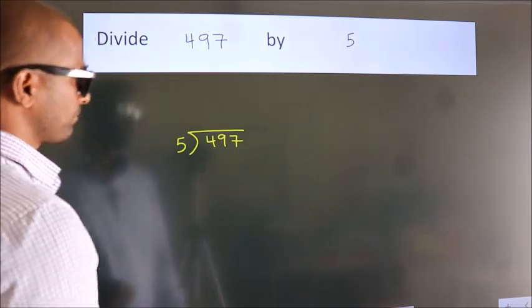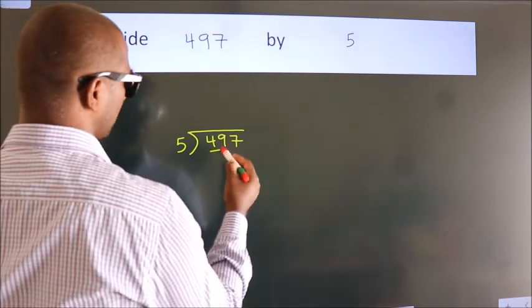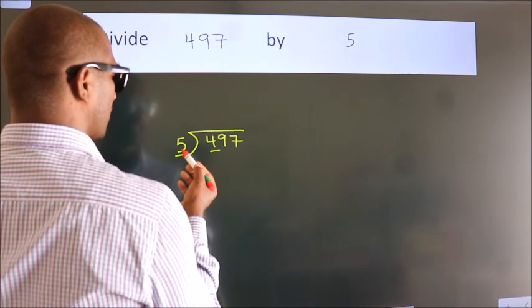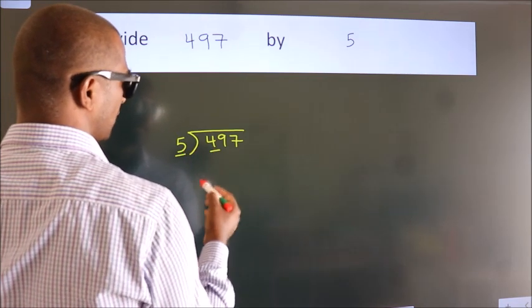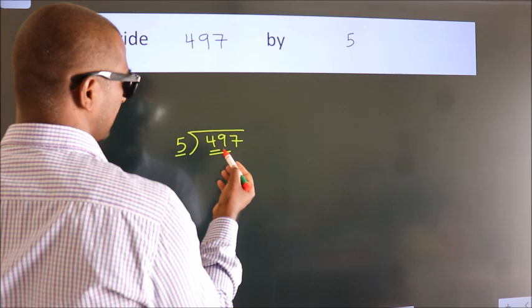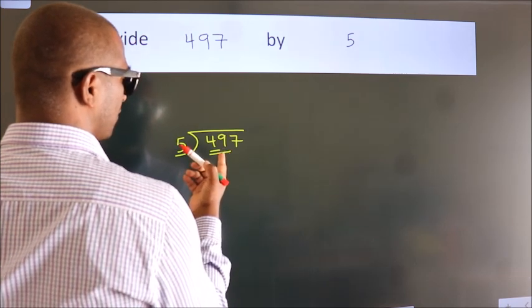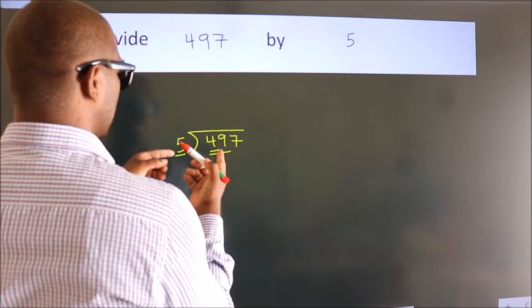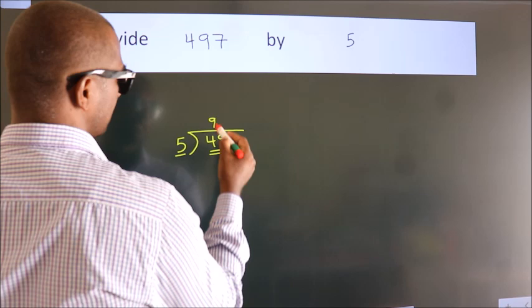Next, here we have 4. Here 5. 4 is smaller than 5, so we should take 2 numbers: 49. A number close to 49 in the 5 table is 5 nines, 45.